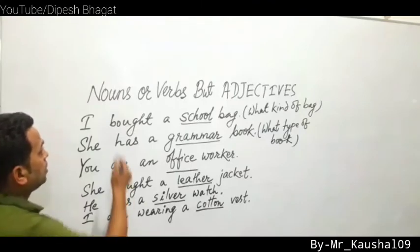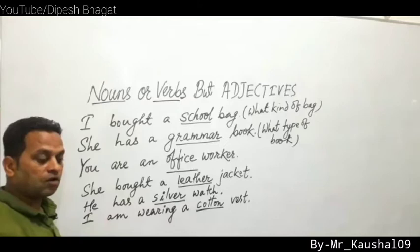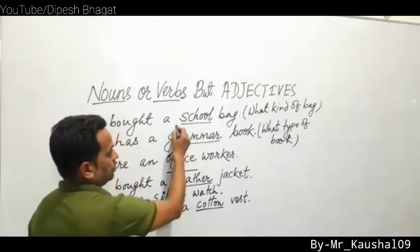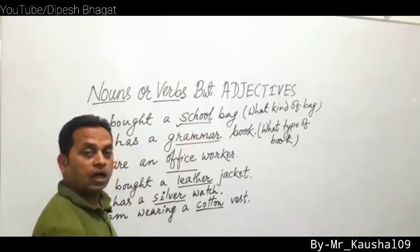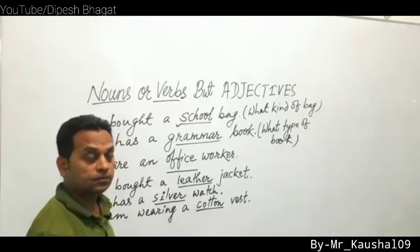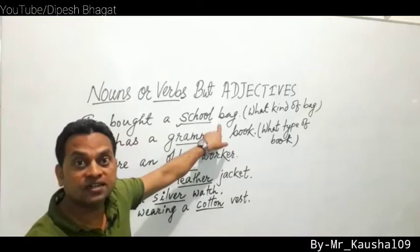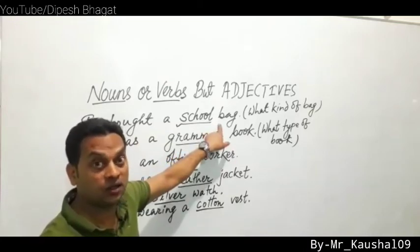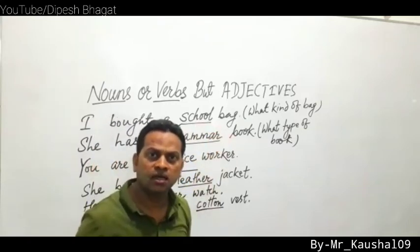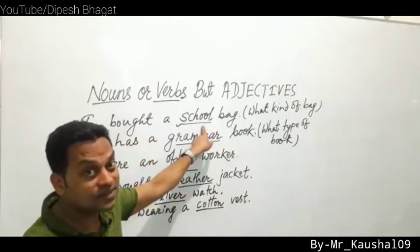Now, nouns can also act as adjectives. For example: 'I bought a school bag.' Here 'school' is normally a noun — 'He reads in a school' — but in 'school bag,' the word school describes the bag and tells what kind of bag it is. So 'school' is acting as an adjective here.